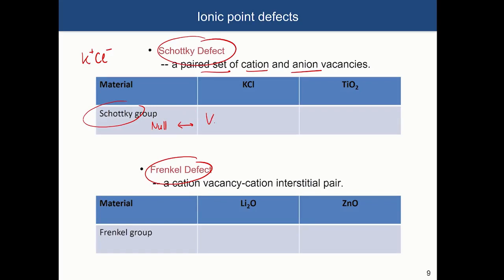In TiO₂, titanium carries 4+ and oxygen carries 2−. The Schottky defect here would be one titanium vacancy carrying four negative effective charges plus two oxygen vacancies each carrying two positive effective charges. This emphasizes that a Schottky complex doesn't have to contain only two defects — it can involve multiple point defects, as in this three-defect example.